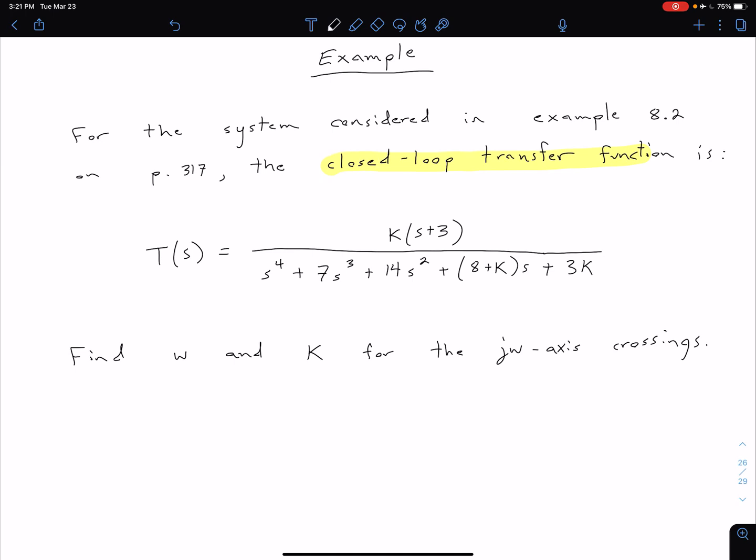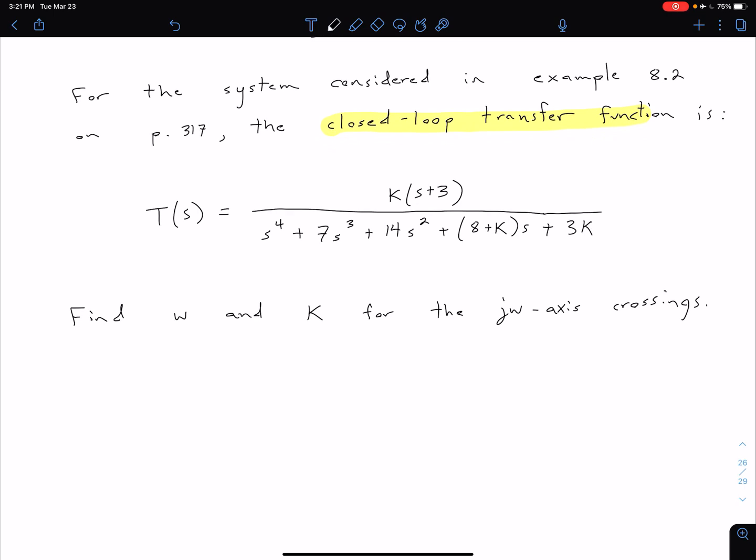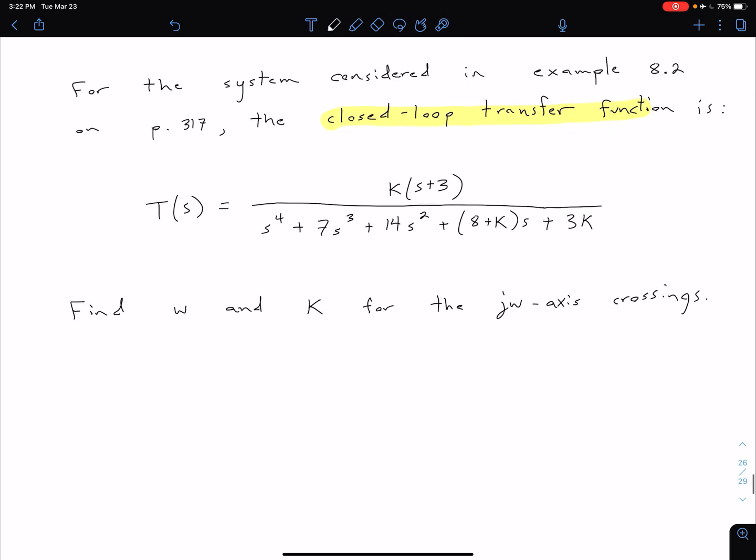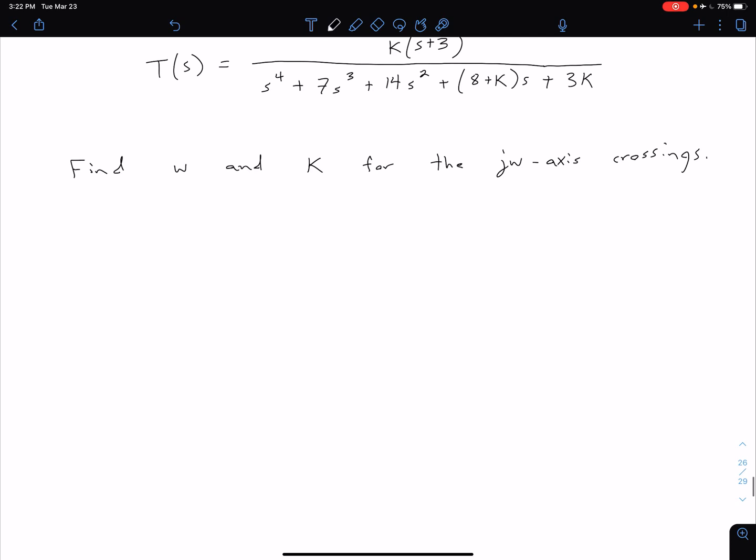We want to find two things here. We want to find the omega, our oscillation, and K for the j-omega axis crossing. That omega is our oscillation frequency. As we said in the previous video, we're going to make a Routh table.